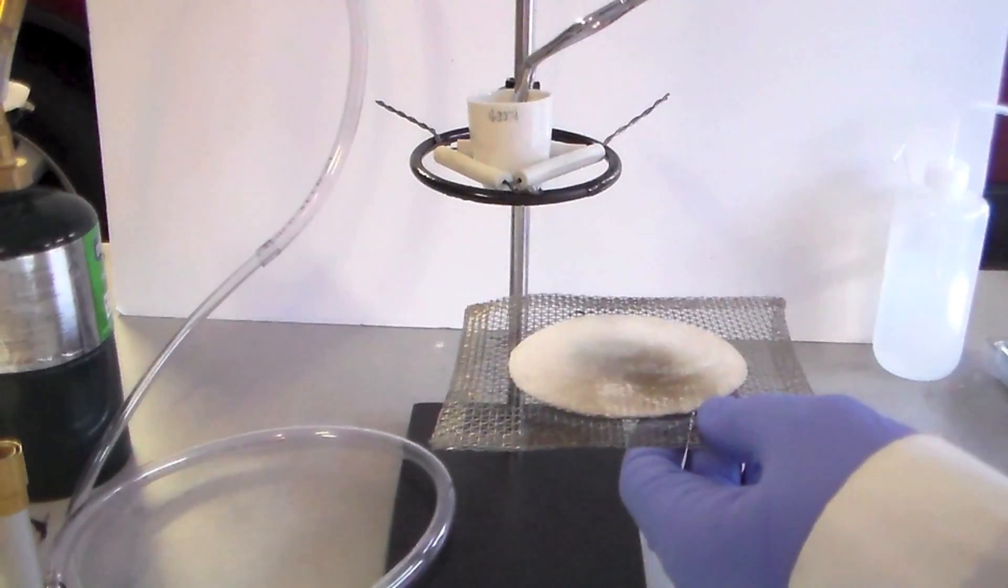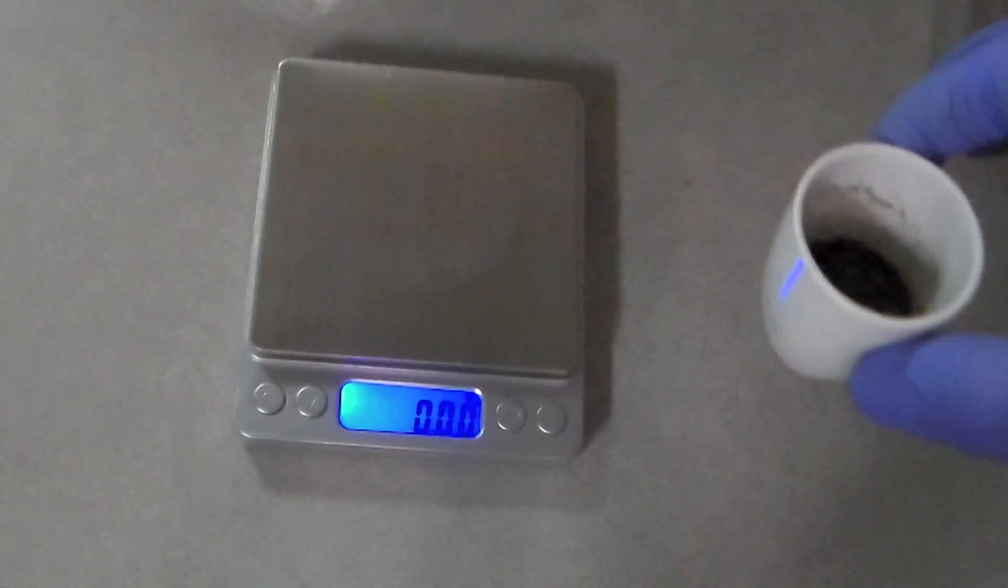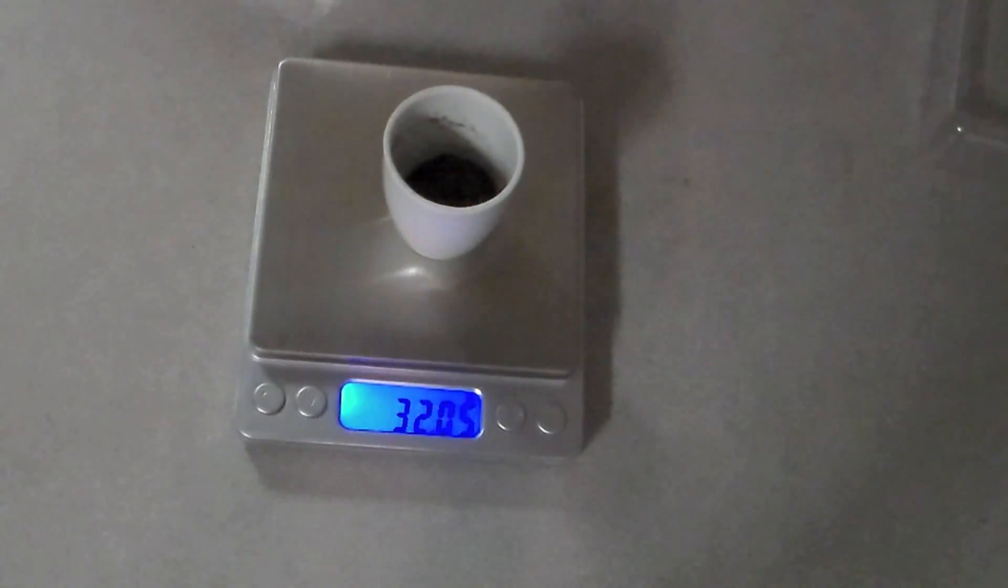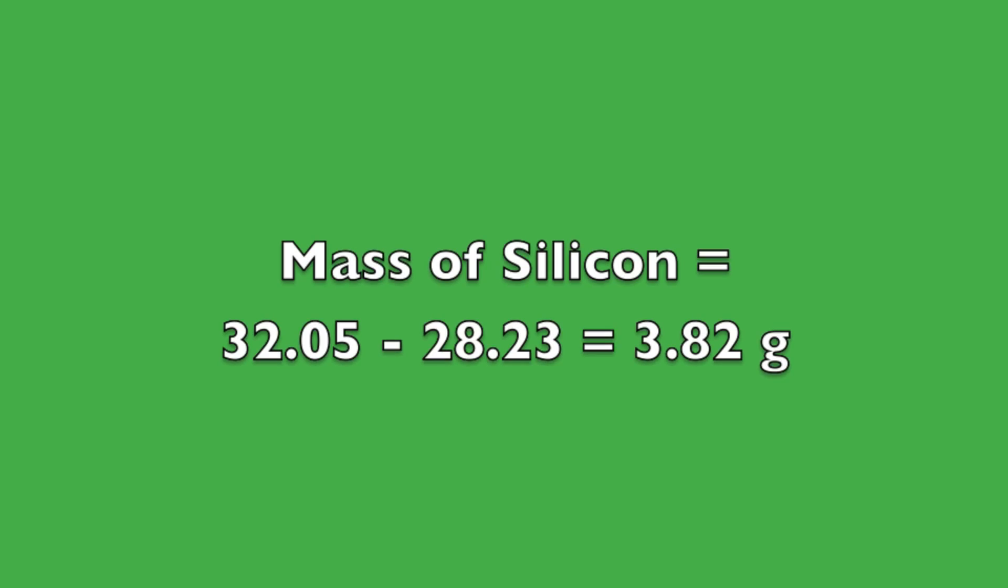I then heated it over a Bunsen burner until the solids were completely dry. I then placed the crucible on a heat resistant pad to cool it down. Once it had cooled to room temperature, I re-weighed it and recorded the mass as 32.05 grams.